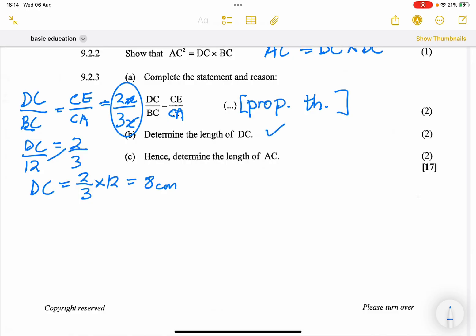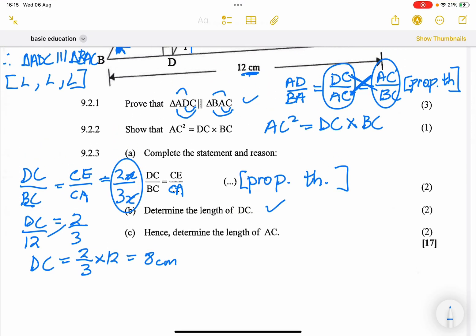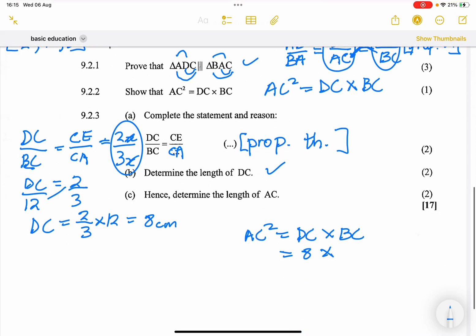All right, and for the final question, they say, hence, determine the length of AC. So meaning, use the previous result to get the next one. Now, I'm going to just tap into something there that, please, I want you to notice. We've already proven that AC squared is DC times BC. Okay? And I'm looking for AC. We know that DC is 8 centimetres. And BC, we were given to be 12 centimetres.